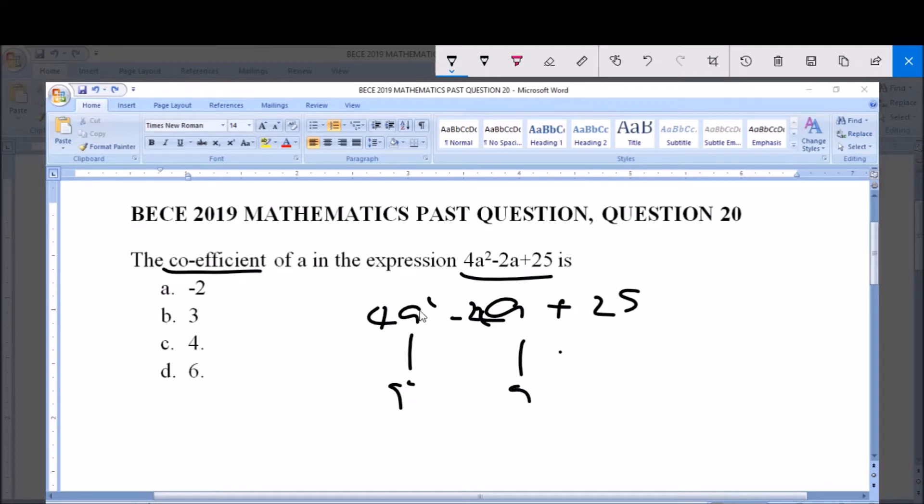Like this a you've seen here now. This a is an alphabet, it's a letter, but it represents a number in this equation. But now it is an unknown because we don't know the number. So this 4 that is following this a, 4a squared, is therefore tagged as a coefficient of this a squared.